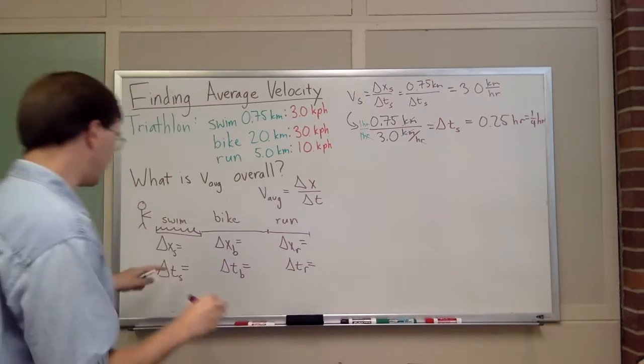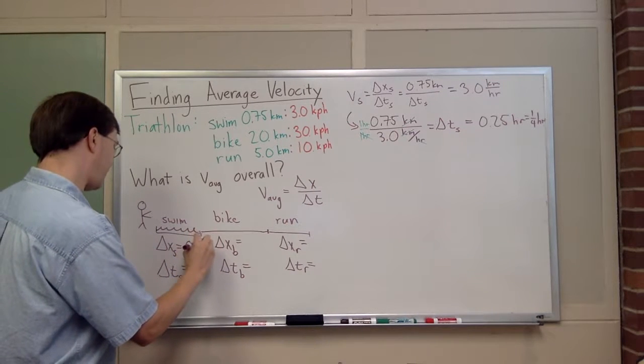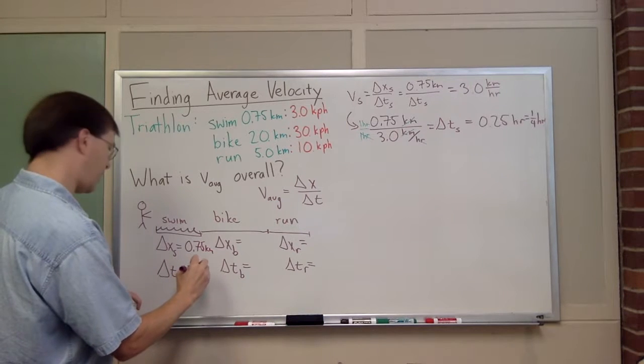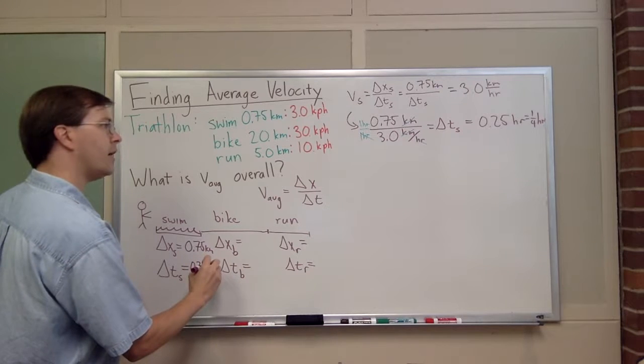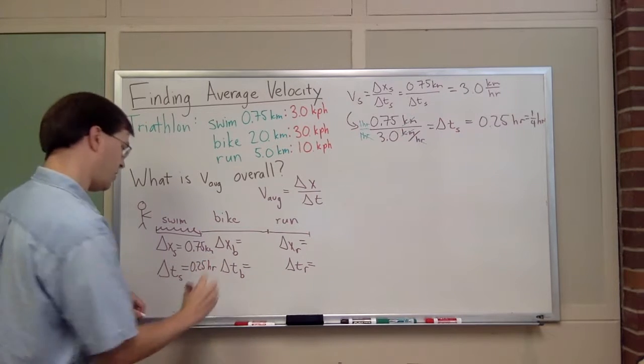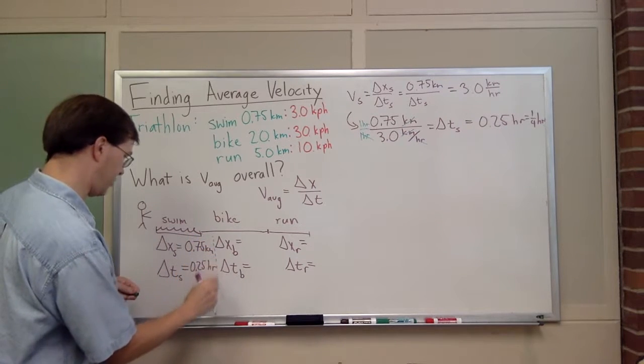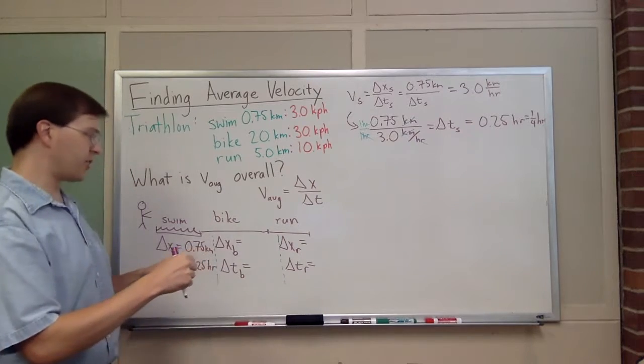I can put these answers down here. My delta x swim was 0.75 kilometers, and my delta t swim was 0.25 hours. I've got those values.